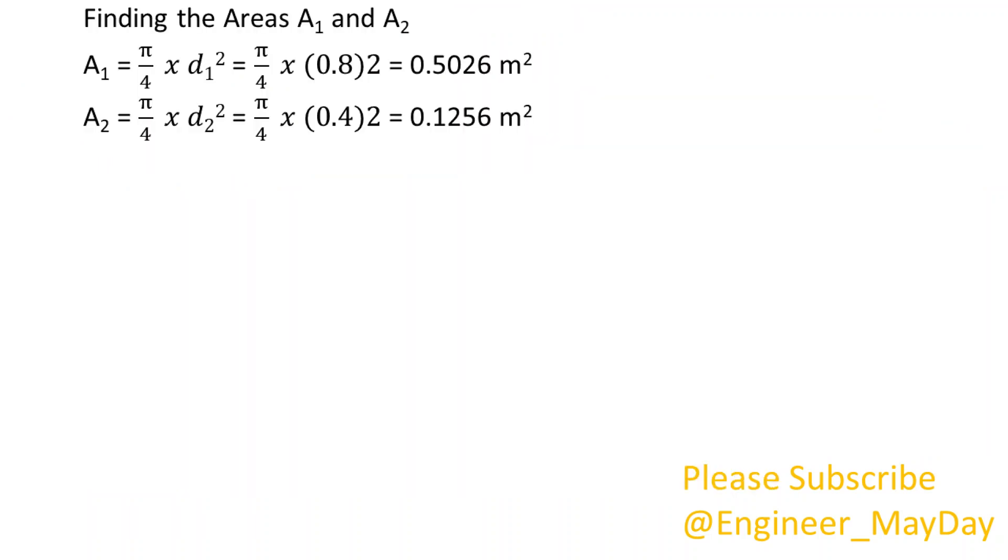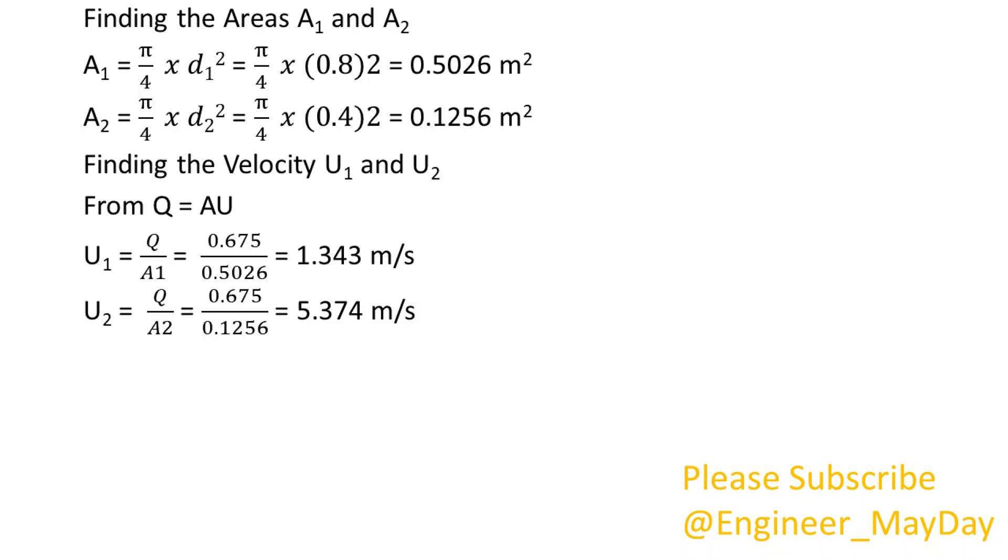Finding the areas A1 and A2. A1 equals 0.5026 square meters. Finding the velocity U1 and U2. U1 equals 1.343 meters per second. U2 equals 5.374 meters per second.